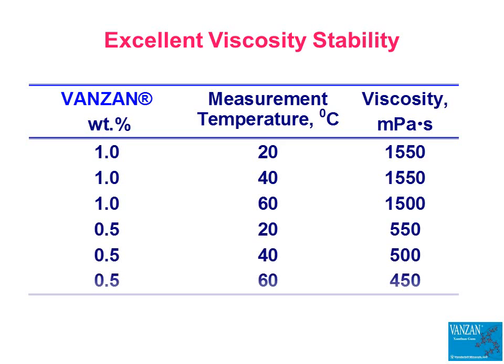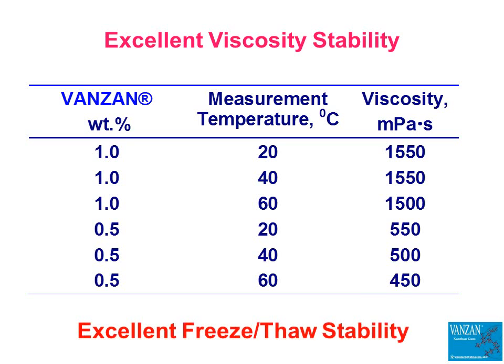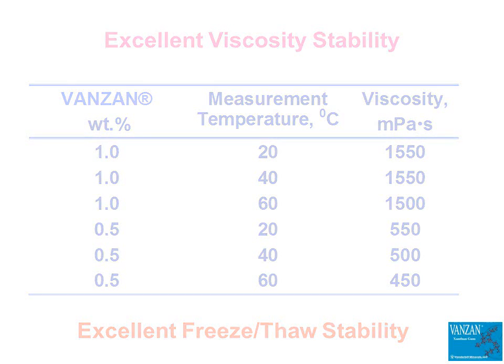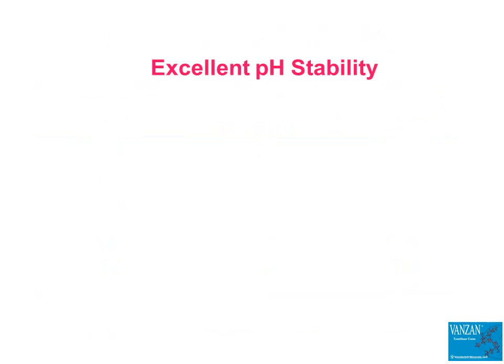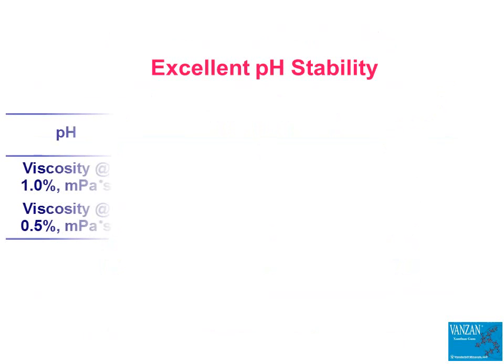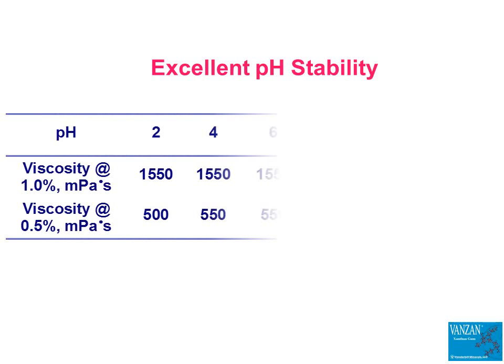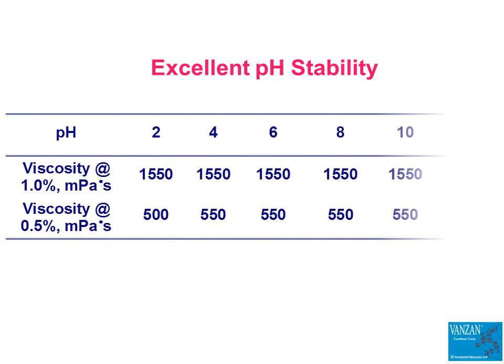Xanthan gum provides the same thickening, stabilizing, and suspending properties during long-term storage at elevated temperature as it does at ambient conditions, and it ensures excellent freeze-thaw stability. Xanthan gum is an excellent choice for use in both acidic and alkaline compositions. As shown in this table, the viscosity remains nearly constant between pH 2 and pH 12. Below pH 2 and above pH 12, the viscosity tends to decrease slightly.